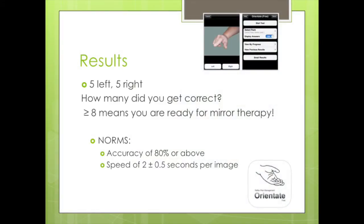Let's go over the results. There should be five left and five right hands marked. If you have eight or more correct responses, you have mastered laterality — congratulations, and now you're ready for mirror therapy. The norms are an accuracy of 80% or above, and speed for hands should be 1.5 to 2.5 seconds per image, and your accuracy and response time should be fairly symmetrical. Those smartphone applications automatically include speed and accuracy data in the results, making it easy to track.